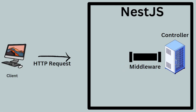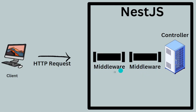Whenever you send a request, it goes to the middleware first and then to the controller. Middleware can be more than one — the request goes through them sequentially. For example, it goes to the first middleware, then to the second, and so on until the last middleware, and then it goes to the controller.